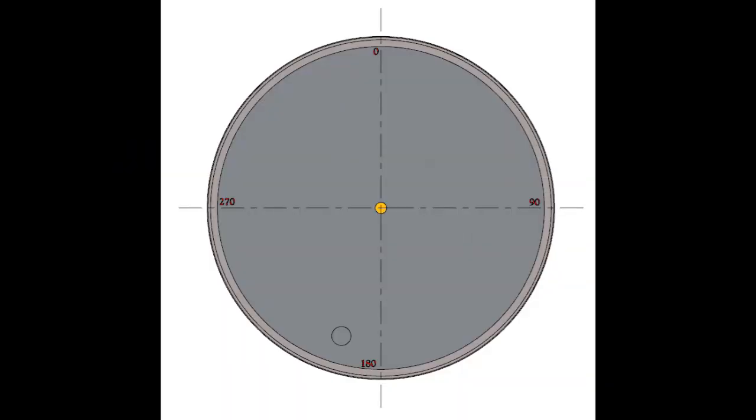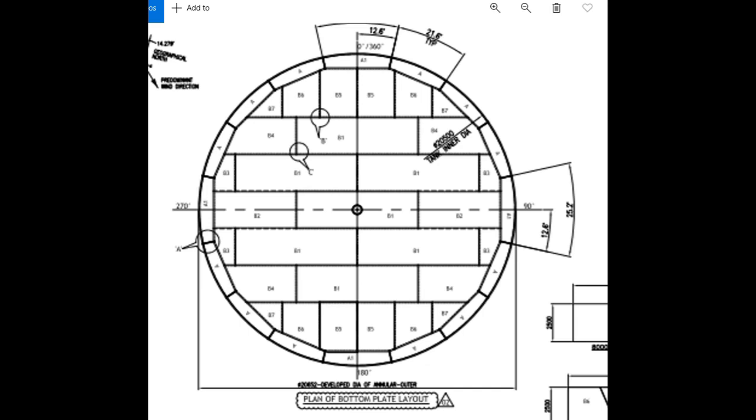Mark the center of tank on tank foundation, and after getting clearance for annular plate laying, mark the 0, 90, 180, 270 degrees coordinates on the foundation from the reference point. Before starting to lay the annular plates, check the orientation and mark the orientation carefully.